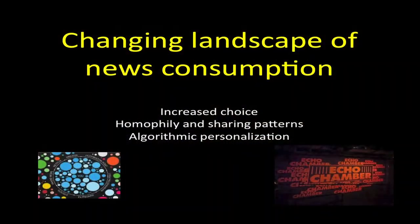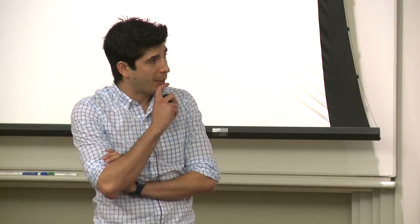So when we talk about the changing landscape of news consumption, we're talking about fundamentally increased choice — from the Houston Chronicle to the internet. The way I can access information, homophily and sharing patterns might change the information I'm exposed to. One concern we haven't heard raised but is underlying all this is algorithmic personalization, which creates a feedback loop between initial choice patterns and the choice sets you see in the future — and might create a feedback loop between initial homophily distribution and future choice sets.